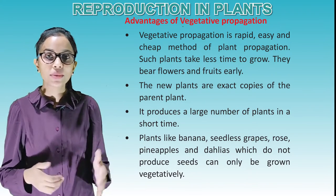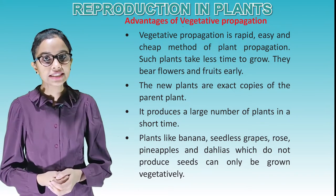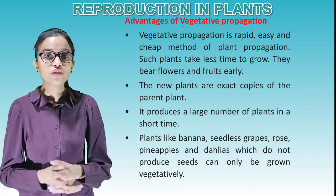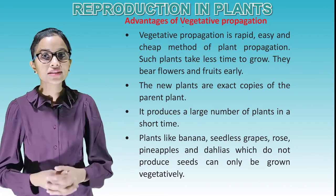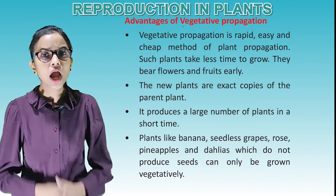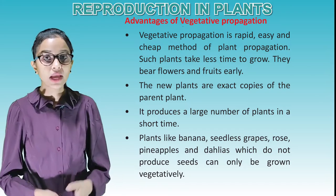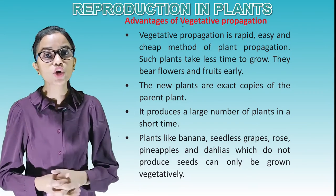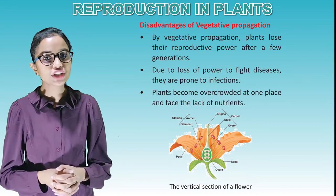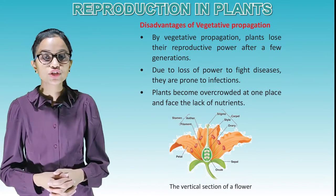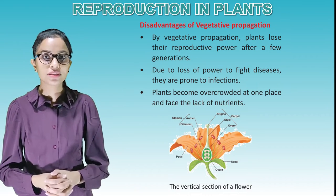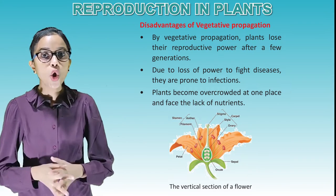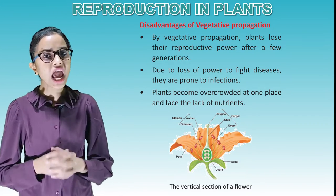Advantages of vegetative propagation: It is a rapid, easy and cheap method of plant propagation. Such plants take less time to grow and bear flowers and fruits early. The new plants are exact copies of the parent plant. It produces a large number of plants in a short time. Plants like banana, seedless grapes, rose, pineapples and dahlias which do not produce seeds can only be grown vegetatively. Disadvantages: Plants lose their reproductive power after a few generations. Due to loss of power to fight diseases, they are prone to infection. Plants become overcrowded at one place and face a lack of nutrients.